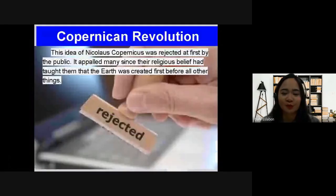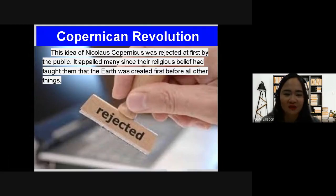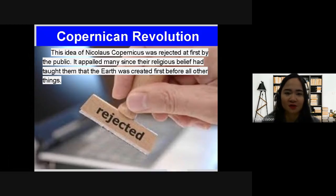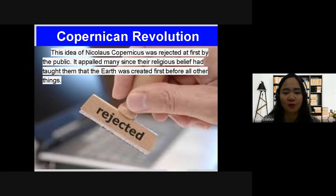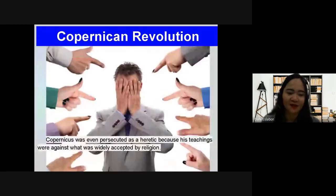The idea of Nicholas Copernicus was rejected at first by the public. It conflicted with religious belief, which had taught that the Earth was created before all other things. There was a conflict between the teachings of the church and the theory of Copernicus, because at that time it was believed that the Earth was the beginning of everything — a contradiction of beliefs and claims. That is why this theory was rejected at first.